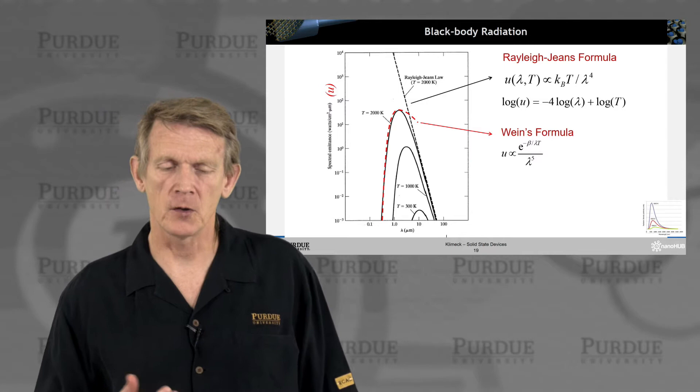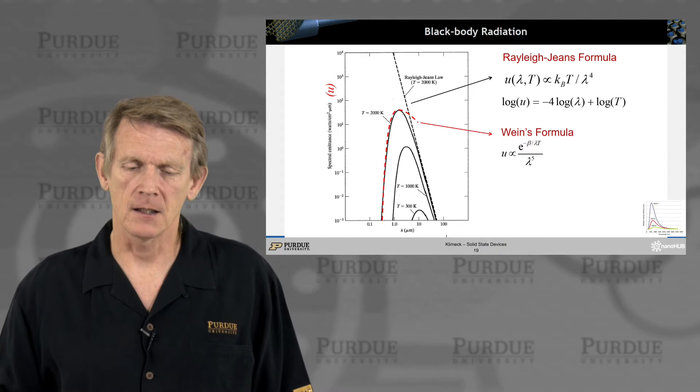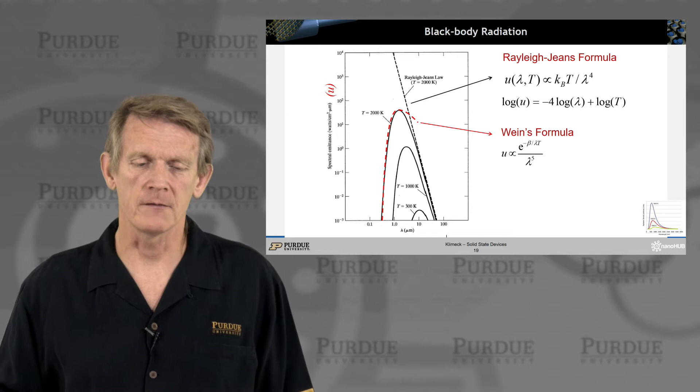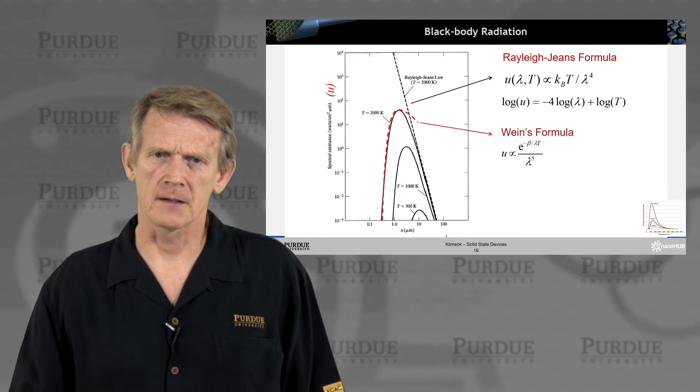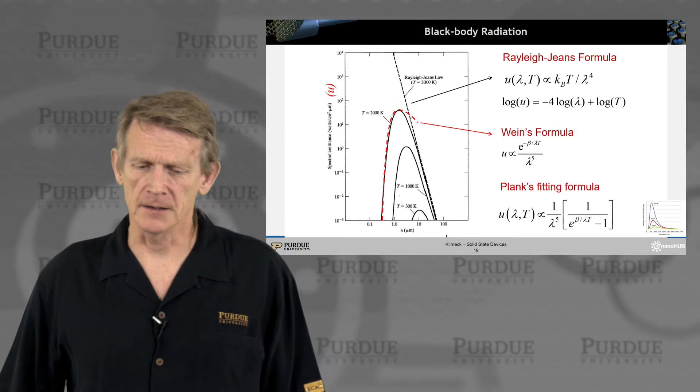Wien came up with another formula based on classical fitting and understanding that matches the curve coming from a low wavelength. But it could not properly predict the decay. So it goes as lambda to the fifth power and has an exponential with the wavelength in it.